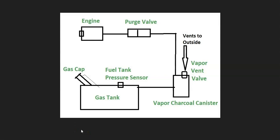There are going to be some differences depending on the year and model of the Ford, so it's always a good idea to get a diagram for your specific vehicle. The basics are: gas vapors leave the gas tank, go through a hose over to what's called a vapor charcoal canister, which acts as storage for the gas vapors.